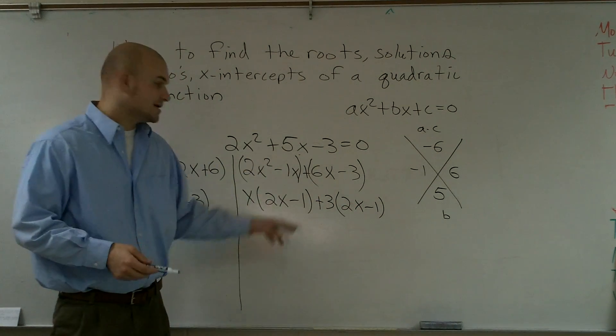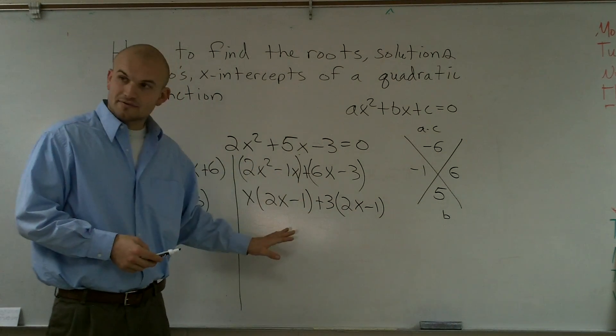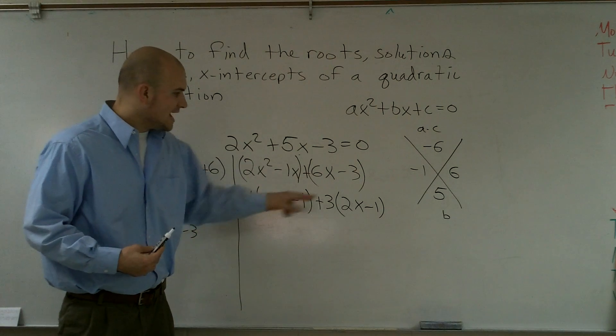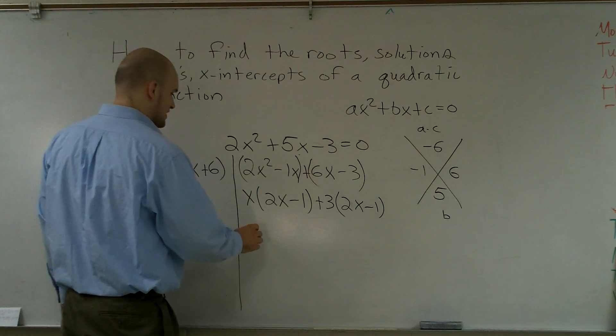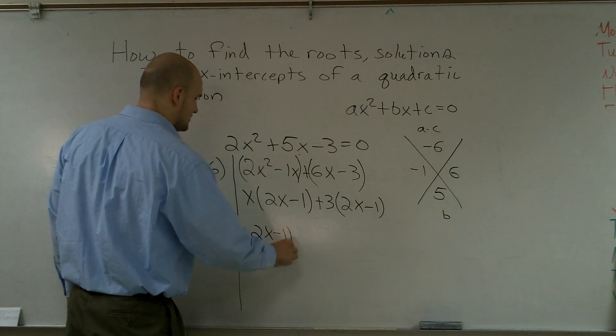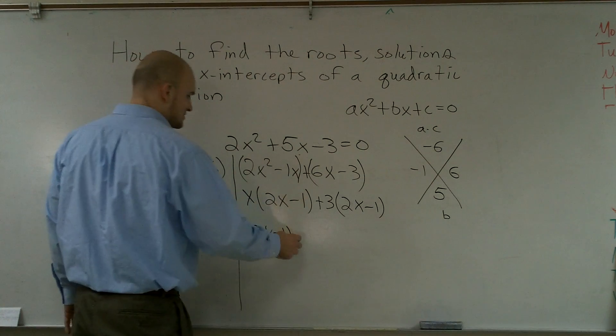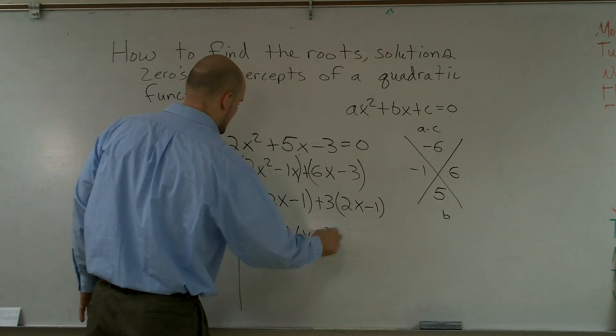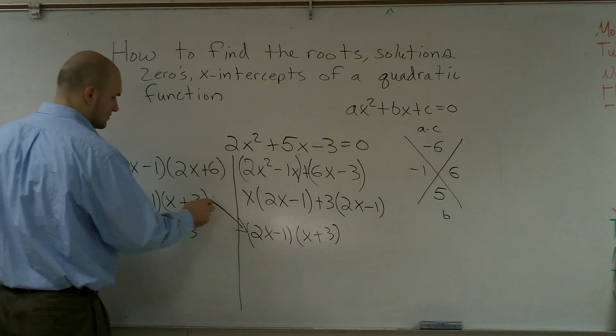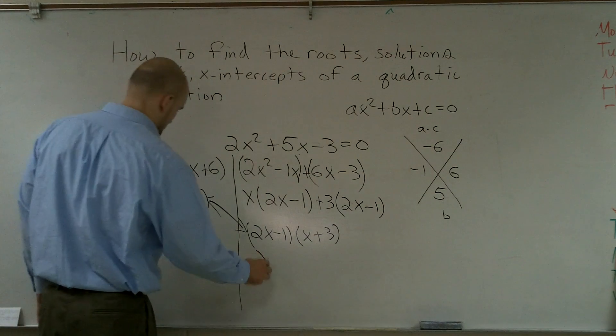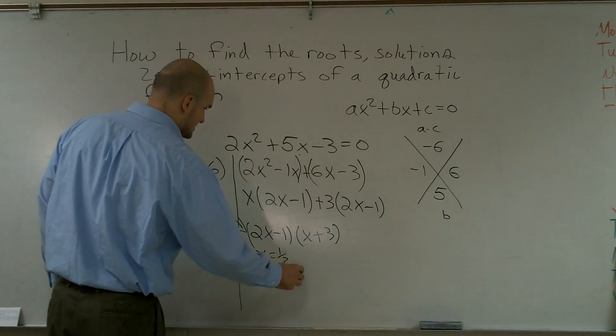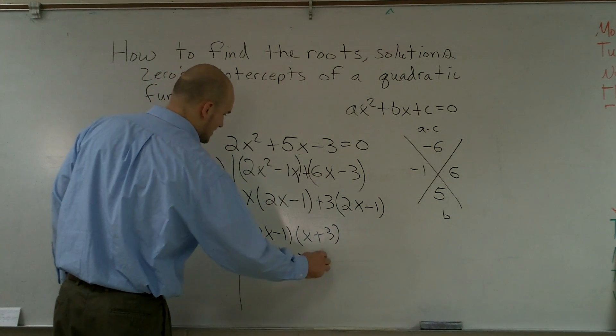So now that I factored out a positive 3, I have 2x minus 1, 2x minus 1. Now I can factor these two out, which we call factor by grouping. I can factor out a 2x minus 1 and I'm left with x plus 3. Again, same thing. x equals one half, x equals negative 3.